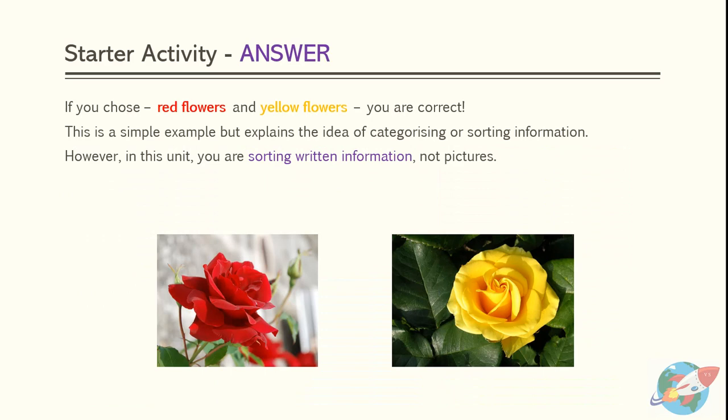Welcome back. Here is the answer to our starter activity. If you chose red flowers and yellow flowers, you are correct. This is a simple example that explains the idea of categorising or sorting information. However, in this unit, you will be sorting written information, not just pictures.